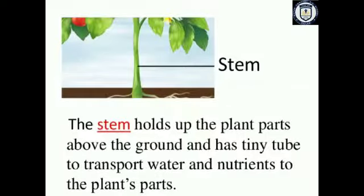Next, let's talk about the stem. The stem helps to properly support the plant. It also helps to transport water and nutrients to various parts of the plant. The water and nutrients absorbed by the roots are transported to the topmost parts of the plant. There are many tiny tubes in the stem, so it helps to transport water and nutrition easily.